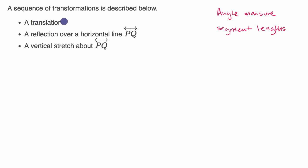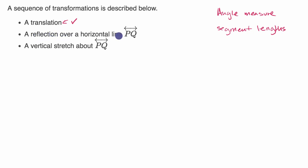A translation is a rigid transformation, and so that will preserve both angle measures and segment lengths. So after that, angle measures and segment lengths are still going to be the same. A reflection over a horizontal line PQ is also a rigid transformation, and so we will continue to preserve angle measure and segment lengths.